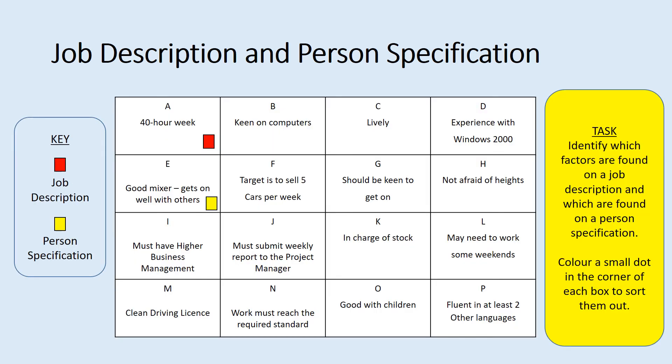Now for a little quiz: work out which items are job description and which are person's specification. Highlight, tick, or label each item from A to P as either job description or person's specification. You can print it off, write it out, or print-screen and highlight. I'll give you five minutes to do this.